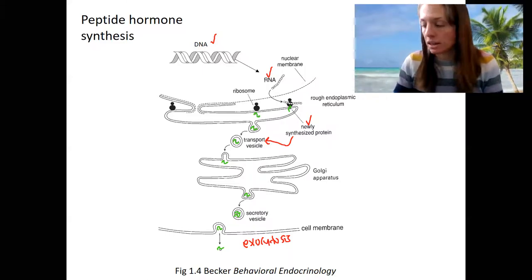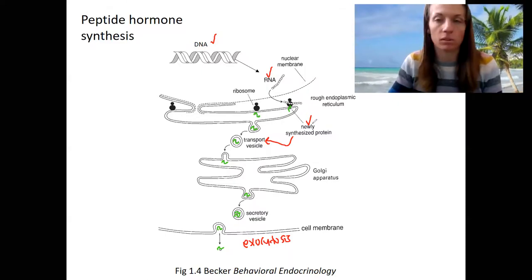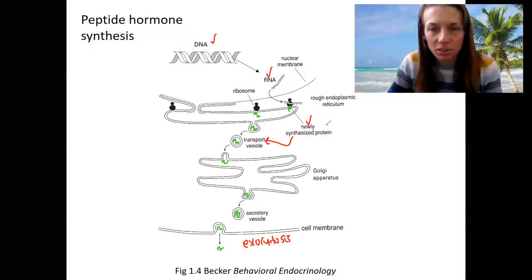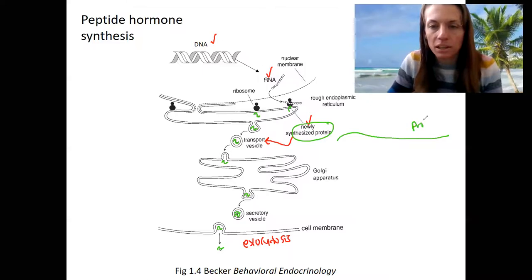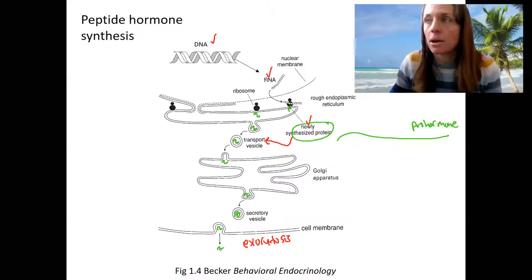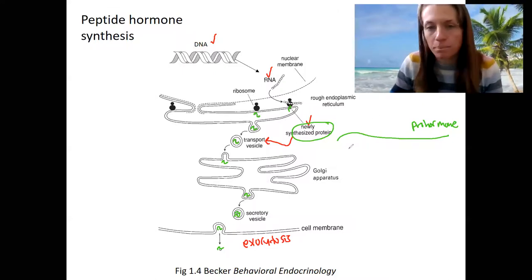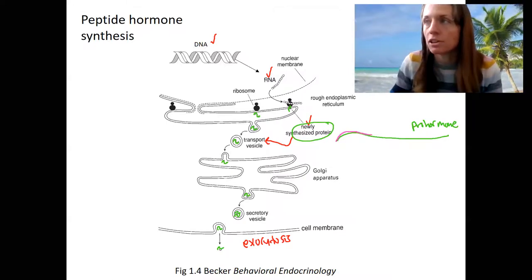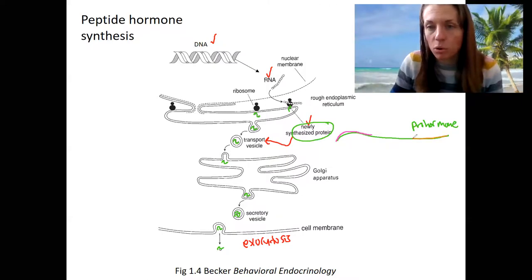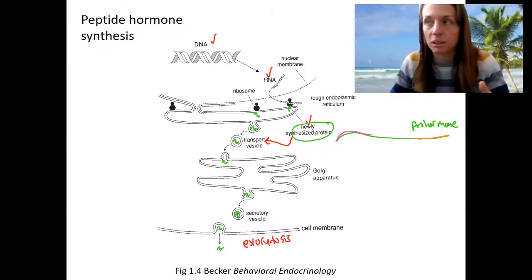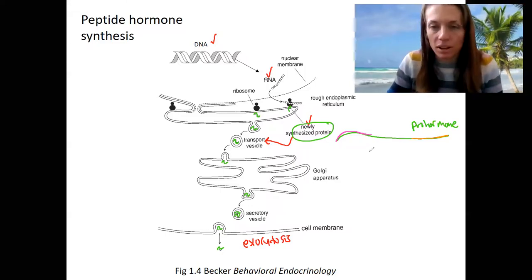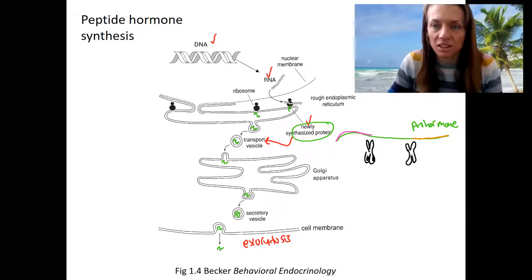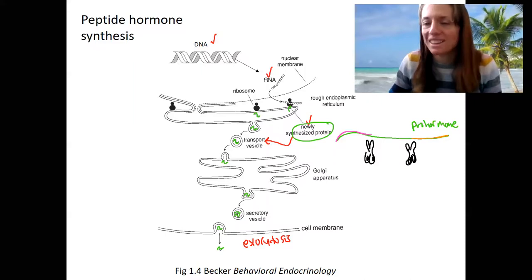One last thing about their production: typically these peptide hormones, especially the peptides, are synthesized as a pro-hormone. What does this mean? The hormone is actually synthesized made up of several different pieces. The pro-hormone is what's going to happen in the vesicle — as part of the secretion and ultimately the final steps of production of this hormone, it's going to be chopped up by enzymes. This process is regulated, so the pro-hormone is going to be chopped into its final products.